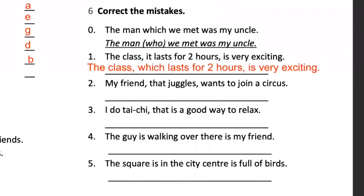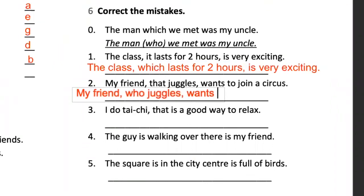Number two: 'My friend who juggles wants to join a circus.' This is the right sentence for a non-defining relative clause — we are not defining your friend, but we give something extra. You could have any friend, and they want to join a circus. We specify something specific about this person: this person juggles, he uses balls. So he could be part of the circus.